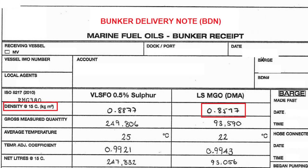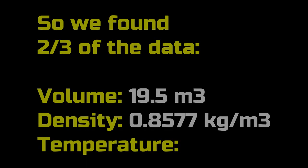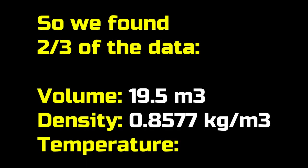The second data we need is the density of the fuel in the tank at 15 degrees Celsius, which can be found written on the bunker delivery note that the barge supplied to us. For example, it is 0.8577 kilograms per cubic meter. So we found two of the three data points that we need.